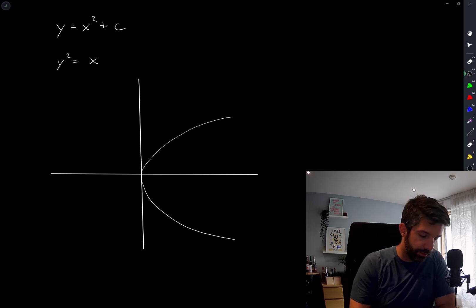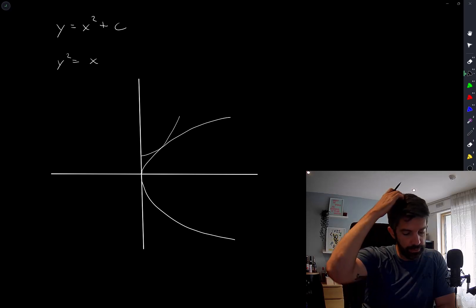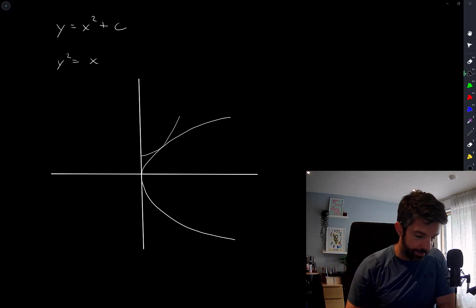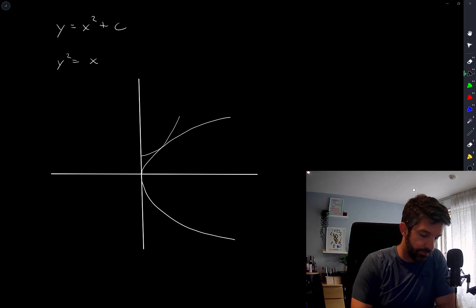If c is zero, then of course I just have this. But if I shift, if I increase c, there will be a point where we meet tangentially like that. And that's the value of c that we're looking for. In fact, we're looking for exactly that coordinate when this happens.